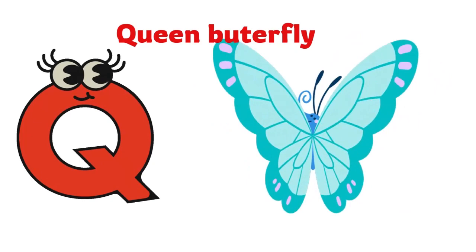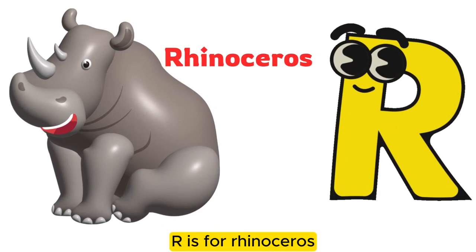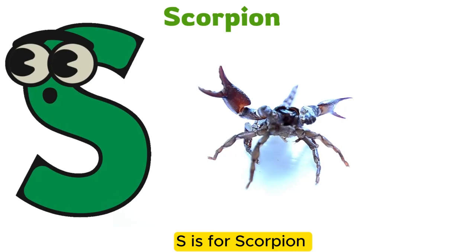R is for Rhinoceros. R-R-R-R-R-R-R-R-R-R, Rhinoceros. S is for Scorpion. S-S-S-S-S-S-S-S-S-S, Scorpion.